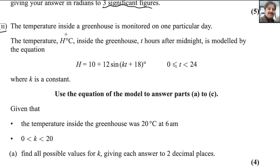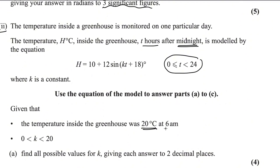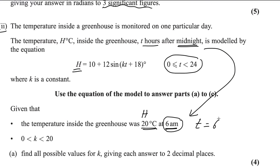For the second part, the temperature H degrees Celsius inside a greenhouse T hours after midnight is modeled by H = 10 + 12sin(KT + 18), where 0 ≤ T ≤ 24 and K is a constant. It is given that the temperature was 20°C at 6 a.m., so H = 20 and T = 6.